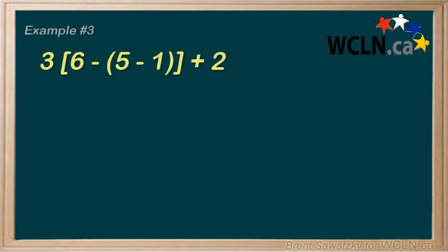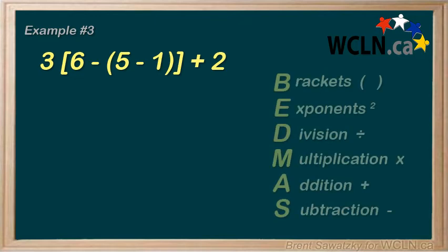Example number 3, a different kind of challenging this time. 3 times in brackets, 6 minus, in another set of brackets, 5 minus 1, and then we close those brackets and the other brackets, plus 2. So, we have 2 sets of brackets. And the curved brackets, they find that it's easier to help you keep track if they use the outer set of brackets as square brackets. They don't really have any different meaning, it's just to help you keep track.